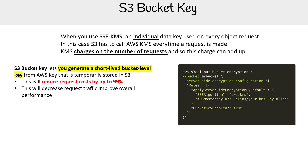When we apply encryption at the bucket level — which is something we can do, as opposed to the object level — you can say globally that you want to always use a default encryption with a specific KMS key, and we can specify bucket key enabled, meaning always use a bucket key.